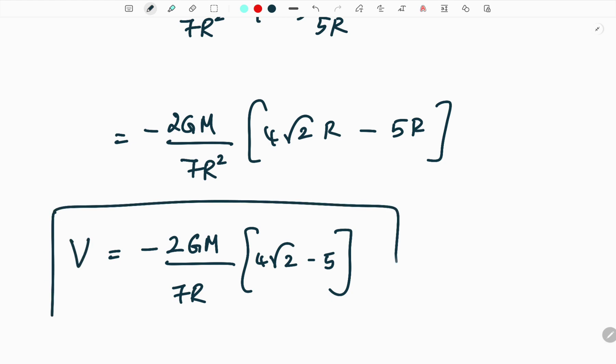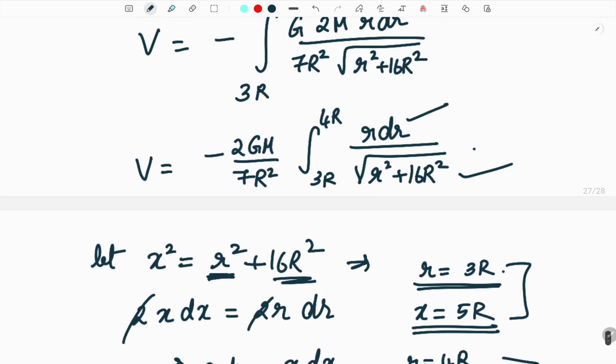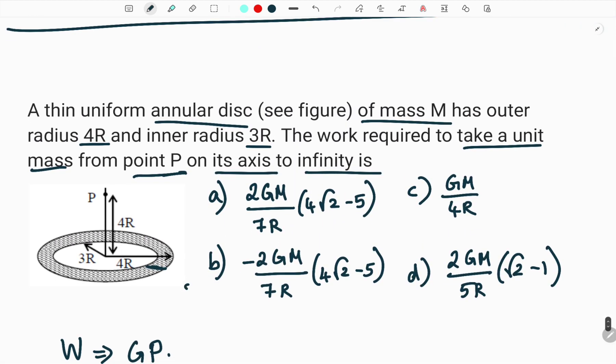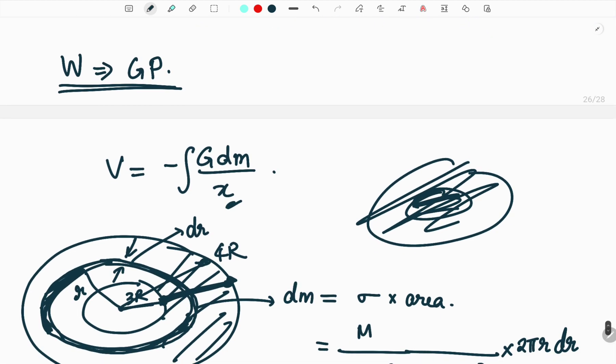So this is the potential and this potential is only equal to the work done from moving a unit mass from point P to infinity. So that means option B is the correct answer.